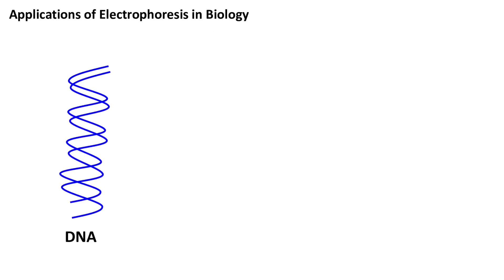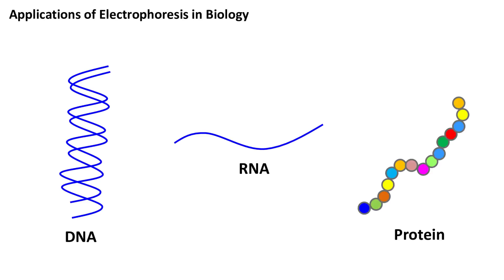Electrophoresis is widely used for the separation of biomolecules such as DNA, RNA, and protein. This is because most biomolecules have positive or negative charge. For example, DNA and RNA usually have a net negative charge, whereas proteins can either have positive or negative charge depending on the amino acids.